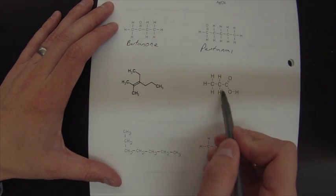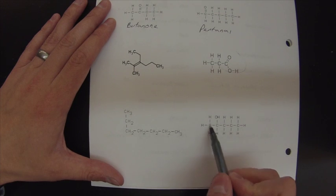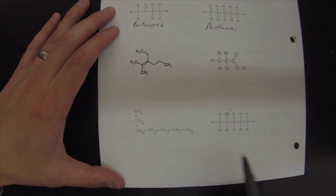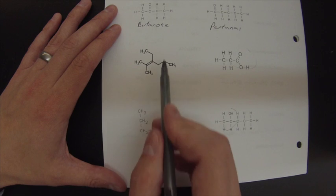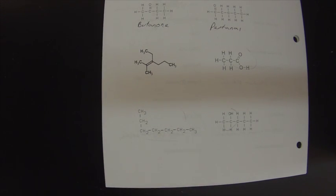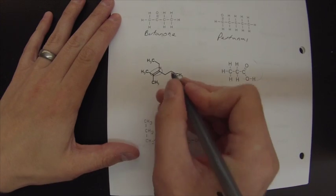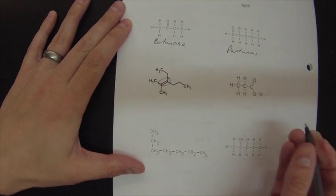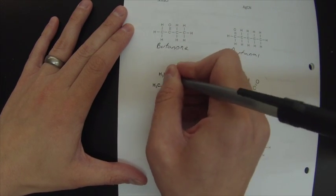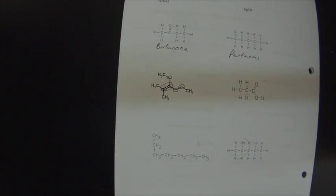This is a carboxylic acid. This is an alcohol. Both of these are just chains with no groups in them. Remember, this is a double bond, and at each bend is a carbon — here's a carbon, here's a carbon, here's a carbon, here's a carbon, and here's a carbon. We covered that in class.